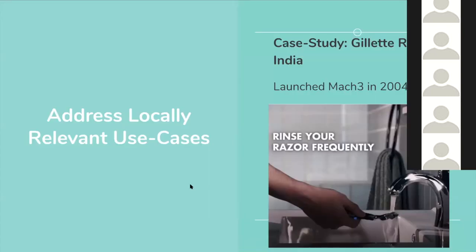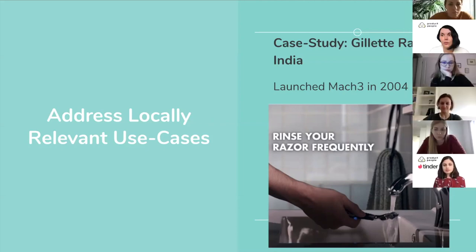The voice of the product should do three things. The first is it should be able to address locally relevant use cases. What I mean is, if your app started in Germany but now you want to go to an APAC market, then you should be able to address a locally relevant need through the value you've created in the product.